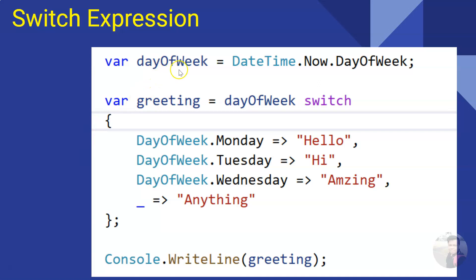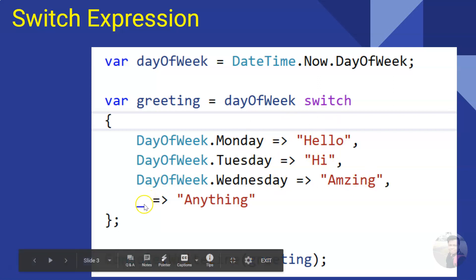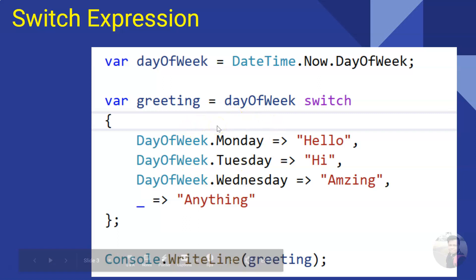Here you can see I have taken the day of week — that is today's day — and I am trying to get different kinds of greetings based on the day of the week. If it is Monday I get 'hello', if it is Tuesday I get 'hi', if it is Wednesday I get 'amazing', and for any other day — the default — I get 'anything'. This example is just to show you how the switch expression works.